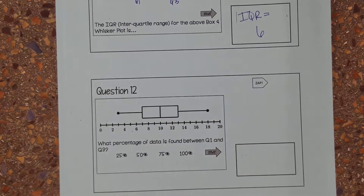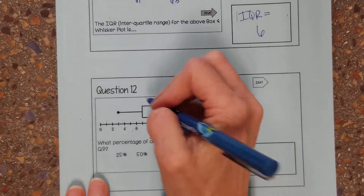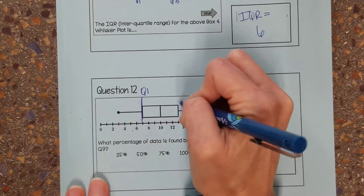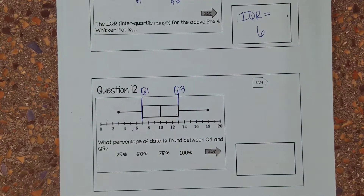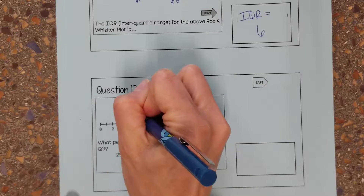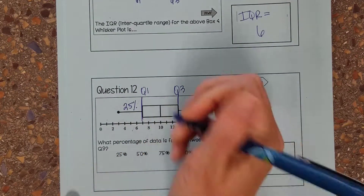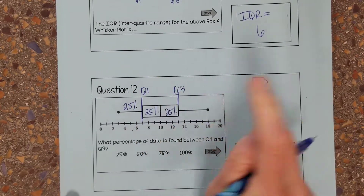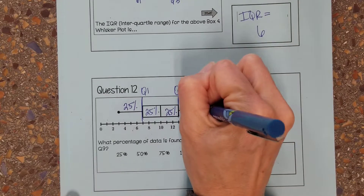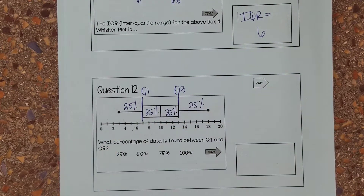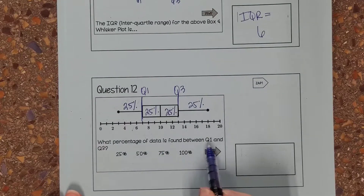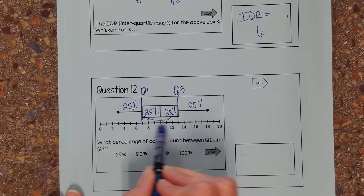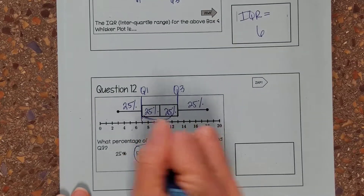Question twelve: another box plot. What percentage of the data is found between Q1 and Q3? In a box plot, each section covers 25 percent — the left whisker is 25%, Q1 to the median is 25%, the median to Q3 is 25%, and Q3 to the right whisker end is 25%, totaling 100%. The data between Q1 and Q3 covers two sections — 25% plus 25% — so the answer is 50 percent.